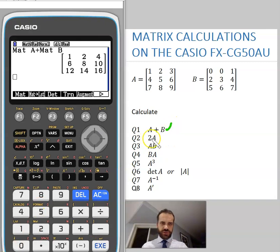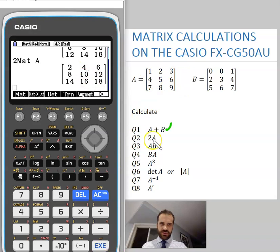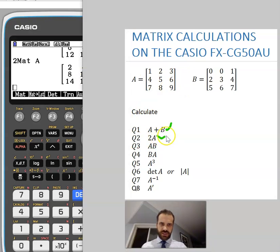Moving right along, 2 times matrix A. That's going to be very straightforward again. I can just do 2 mat alpha A. And you can see that's 2 times matrix A, so I can tick that off.